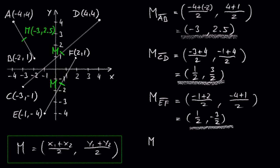What is the midpoint of G, 2, comma negative 4 and H, 4, comma 2?